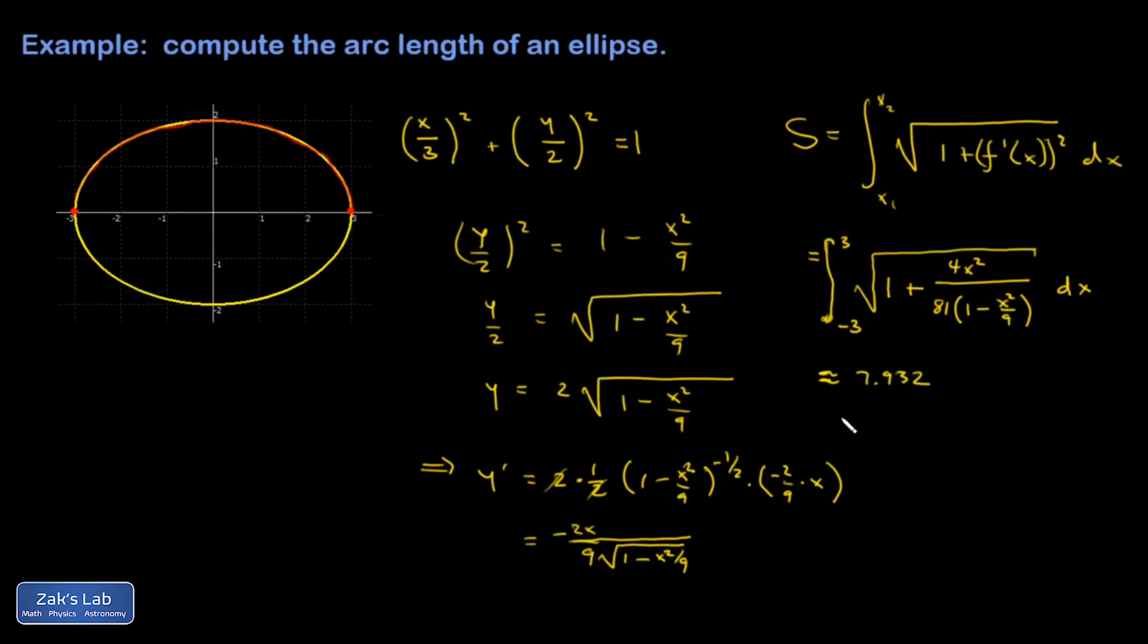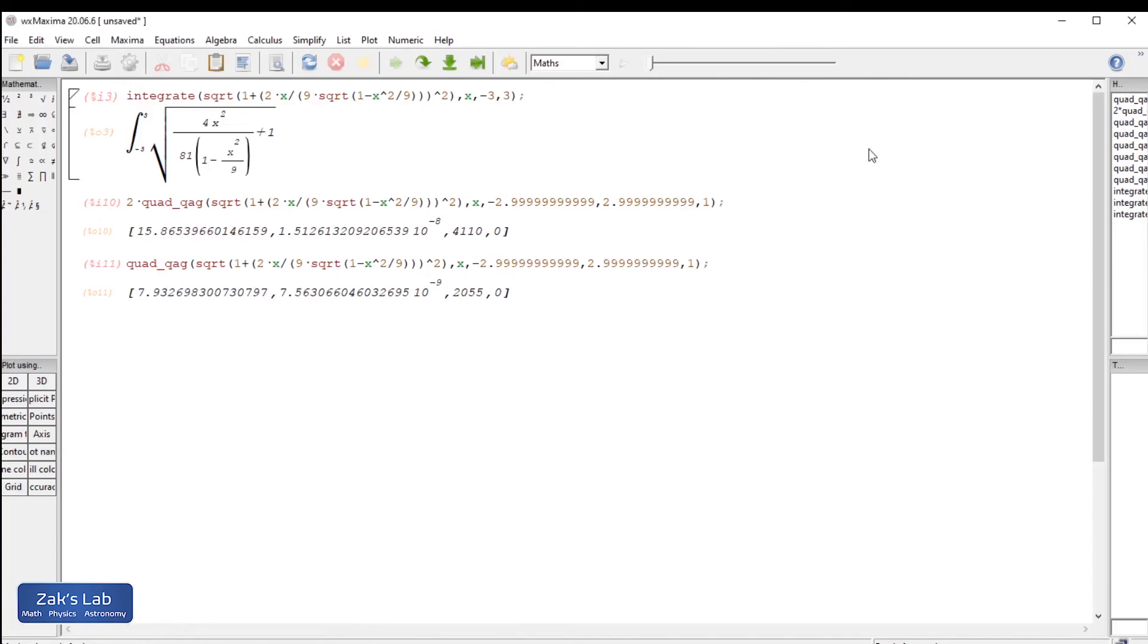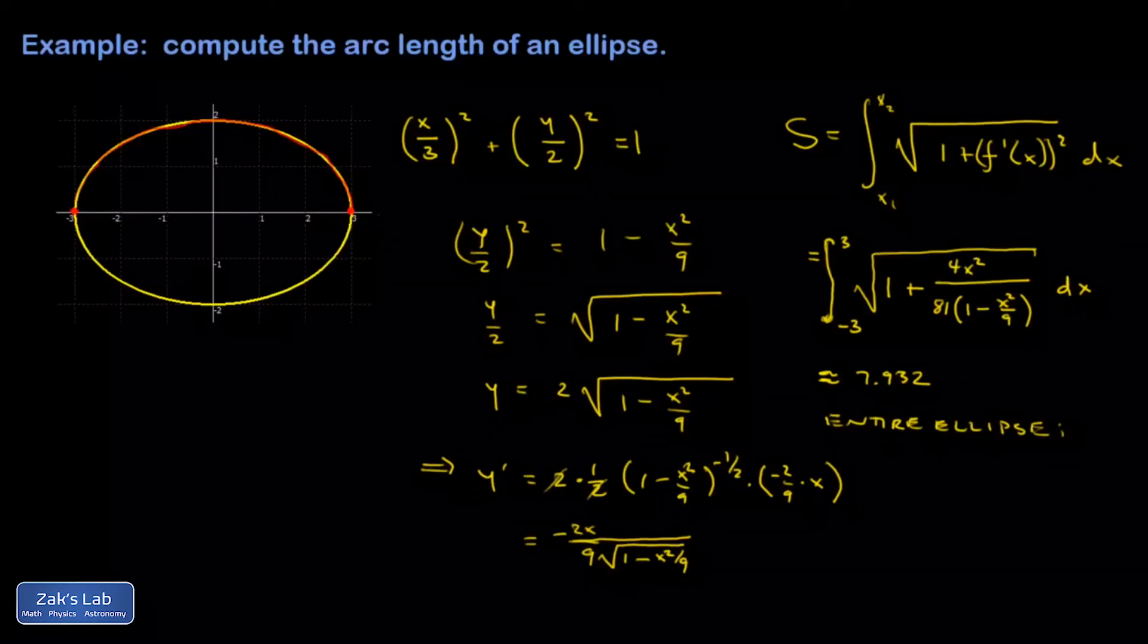So 7.932 was my approximate arc length. But remember, that represents only the upper half. So then the entire ellipse is just twice that. And it was 15.865 or 15.87 is good enough.